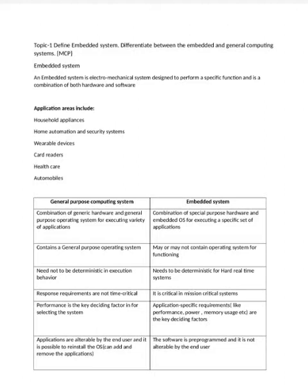The fifth difference is that when designing a general purpose computing system, the key design factor is performance — we always go for systems with better speed. Whereas when designing an embedded system, the key factors are power, cost, size, and speed.